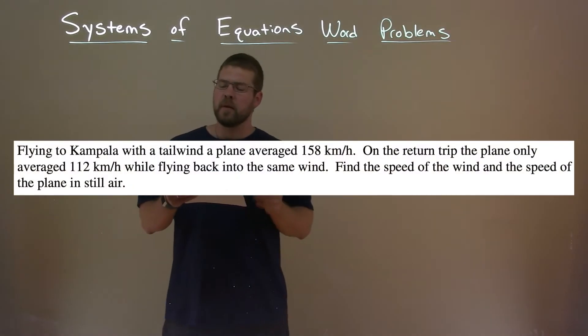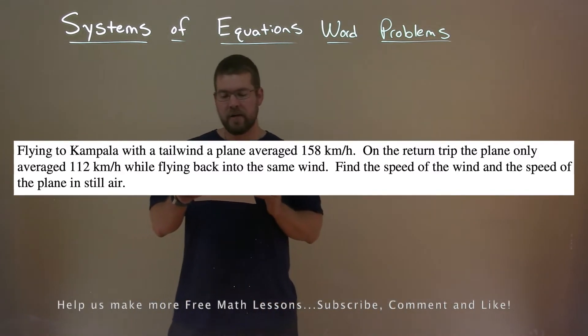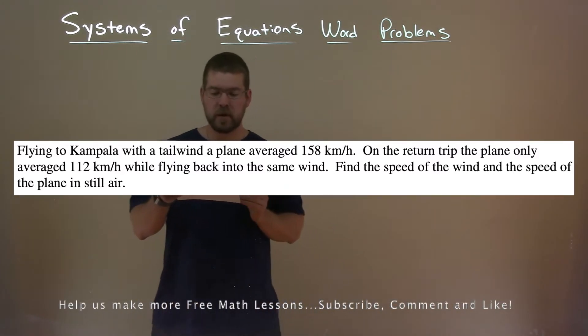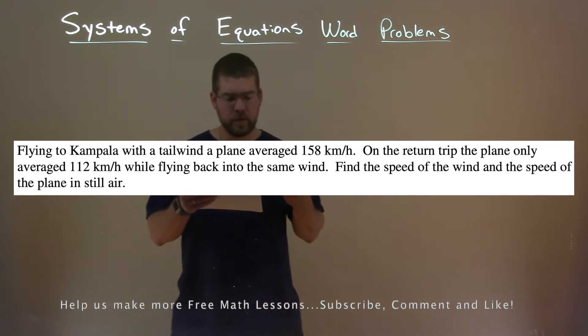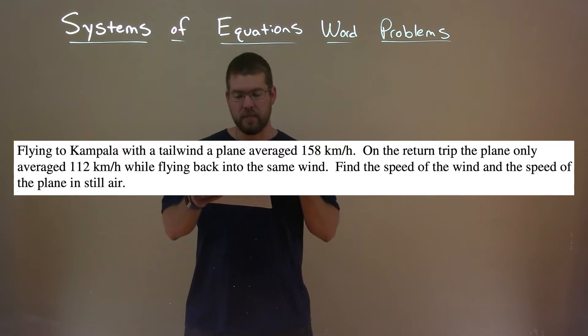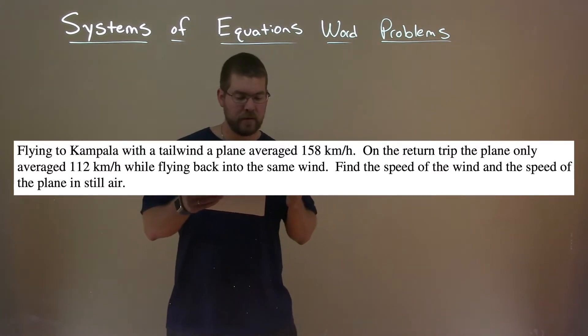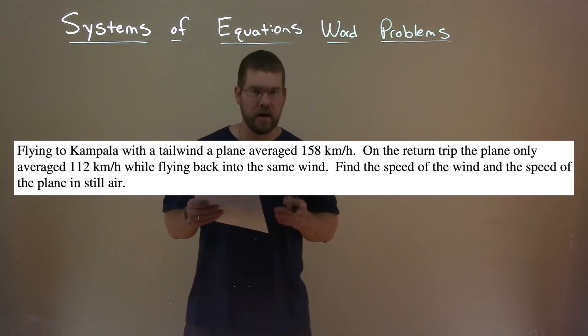We're given this problem: flying to Kampala with a tailwind, a plane averaged 158 kilometers per hour. On the return trip, the plane only averaged 112 kilometers per hour while flying back into the same wind. Find the speed of the wind and the speed of the plane in still air.